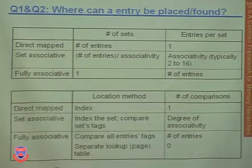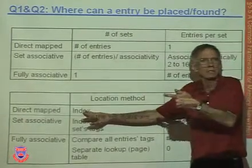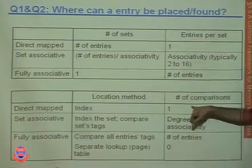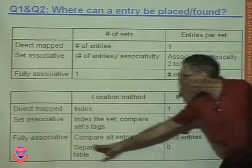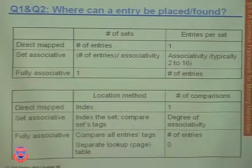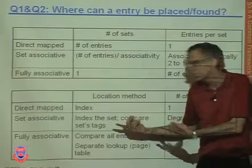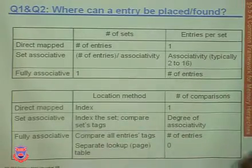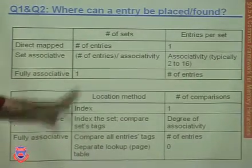If comparisons are done with one comparator, it's serial. If done in parallel, you need that many hardware comparators. For a direct map cache, we index and need only one comparison — does the tag match, yes or no? For fully associative, we must compare all entry tags in parallel or use a separate lookup table with no comparisons. For set associative, we index into the set and then compare all tags in that set in parallel. There are time and space costs this table captures.